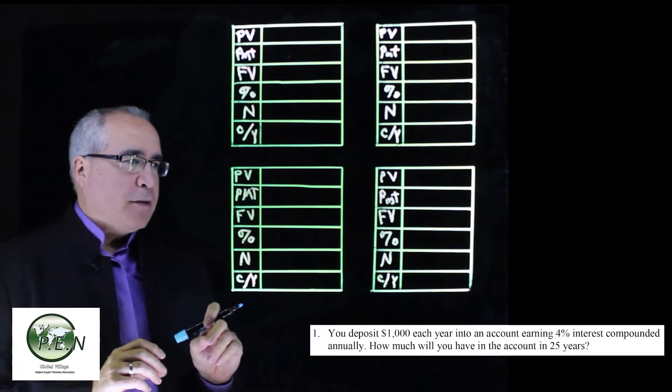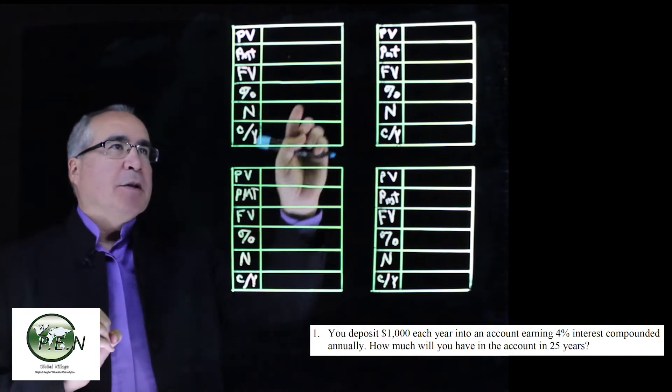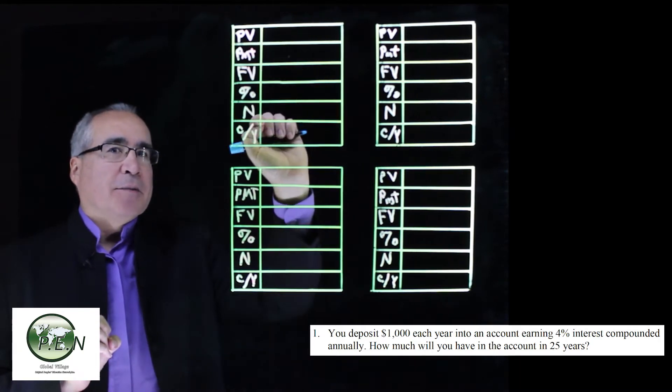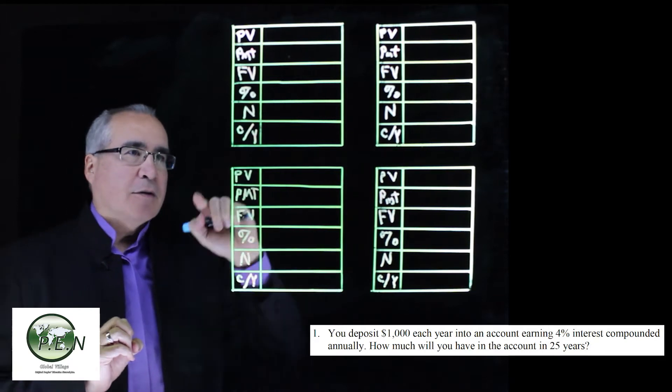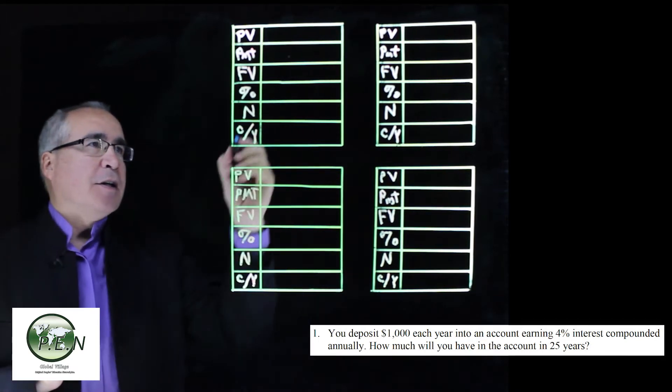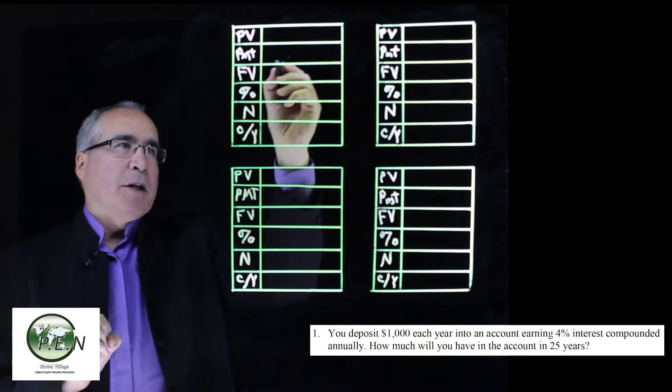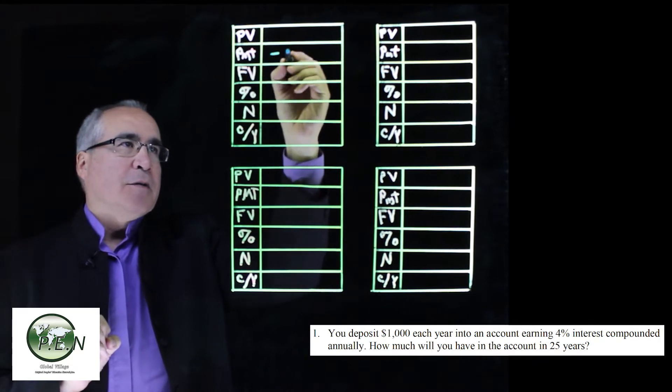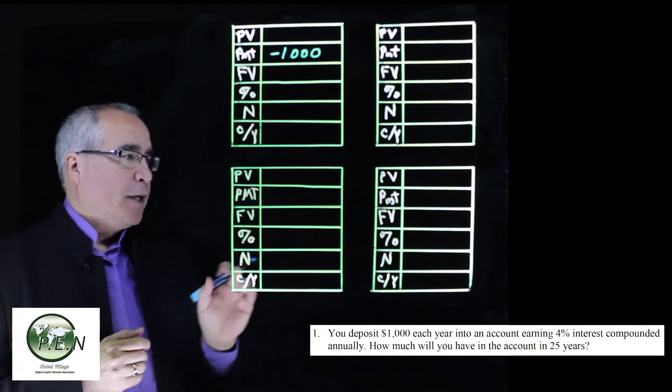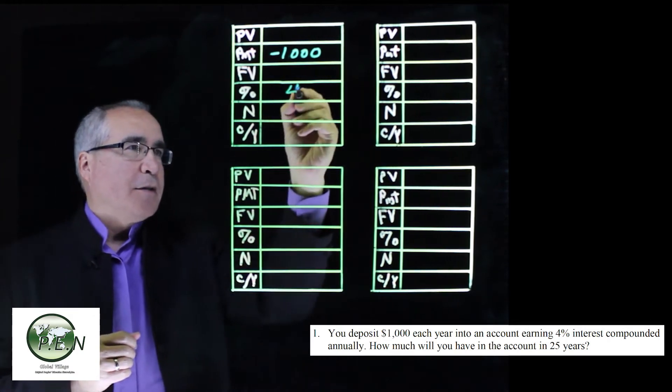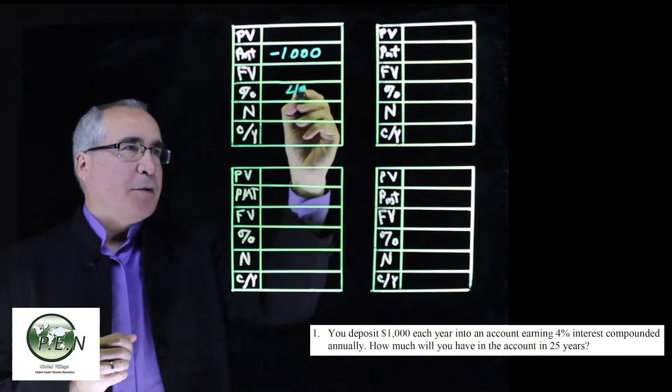If you deposit $1,000, now you might be tempted to put that in as a present value, but notice each year into an account. So it's a regular deposit of $1,000. So that's what the payment amount is for. We're making regular payments into an account, an investment. We've got 4% interest, so we put that in there.